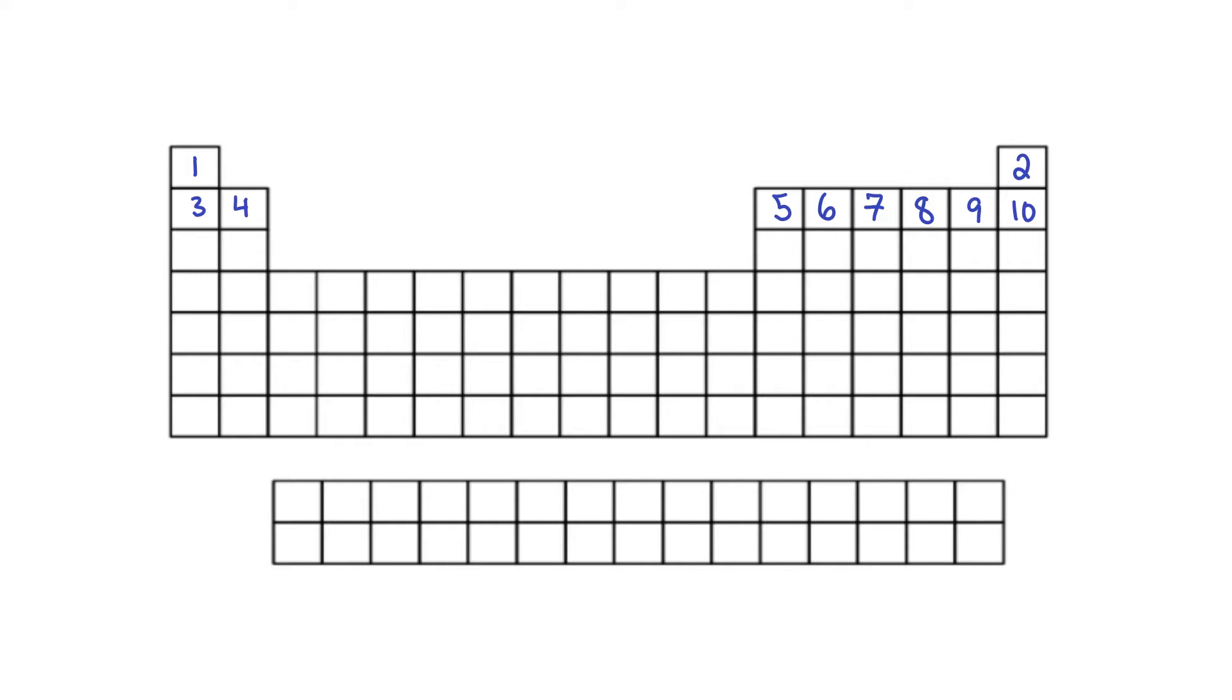The rows going across the periodic table are, unsurprisingly, called periods. Elements in the same period have the same number of energy levels.